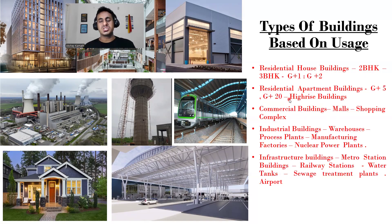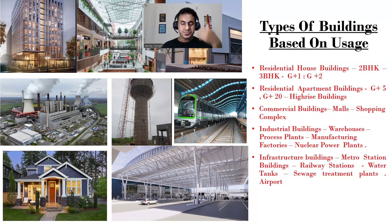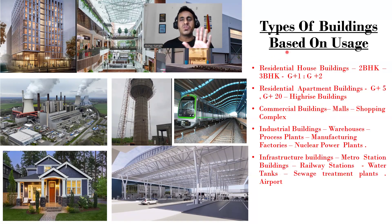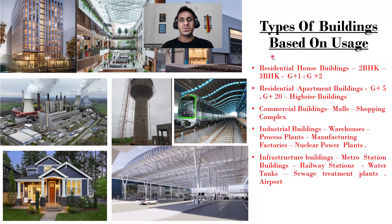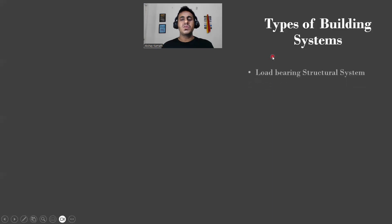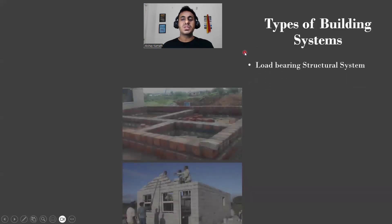Whatever I've told you is only for buildings. Apart from that we also have roads, bridges — steel structure bridges and so on — but we won't get into those. This classification is specifically for buildings. Now let's see what are the different types of building systems.